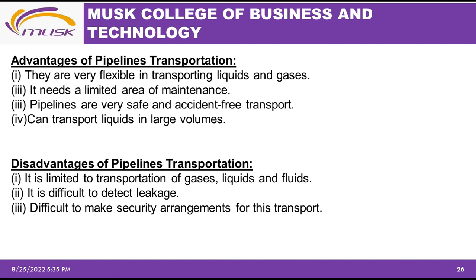Disadvantages of pipeline transport: it is limited to transportation of gases, liquids, and fluids and cannot transport any other items. It is difficult to detect leakages and difficult to make security arrangements for this mode of transport.